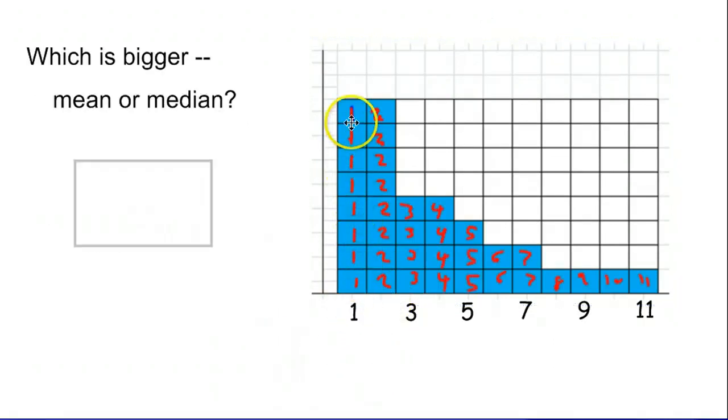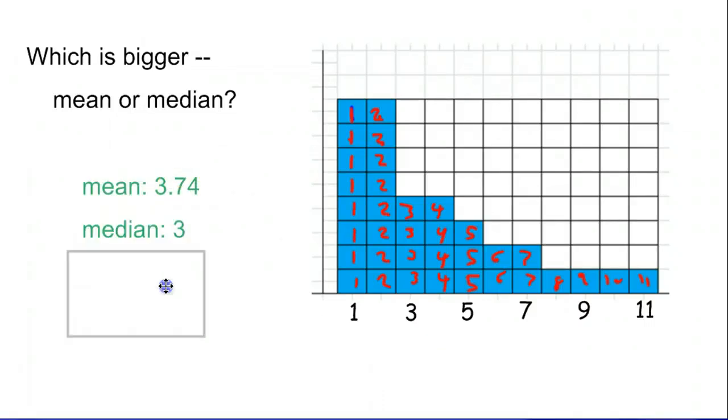All of these are 1's in our distributions, 2's in our distributions, 3's. When we put this all in our calculator we will find that the mean is 3.74 and the median is 3.